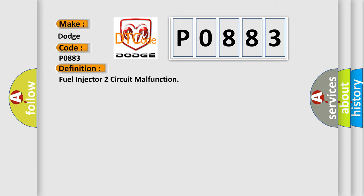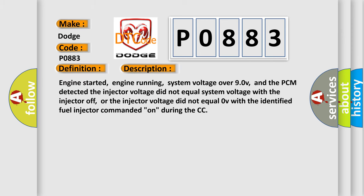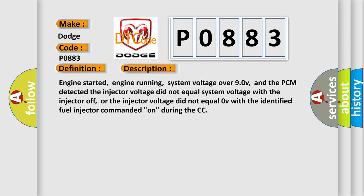The basic definition is Fuel Injector Two Circuit Malfunction. And now this is a short description of this DTC code: Engine started, engine running, system voltage over 9.0V, and the PCM detected the injector voltage did not equal system voltage with the injector off, or the injector voltage did not equal 0V with the identified fuel injector commanded on during the CC.